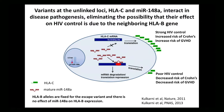This chromosome 7 variant associates with HIV outcome, but only among individuals who have HLA-C alleles that are inhibited by the microRNA. In individuals whose HLA-C alleles are not regulated by the microRNA, this variant has no effect. This eliminated the possibility that the association was due to HLA-B, because HLA-B is not regulated by this microRNA.